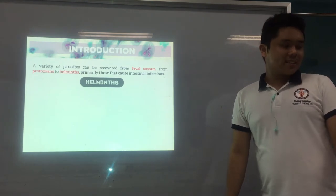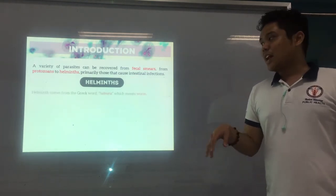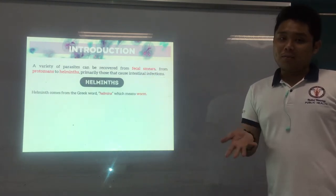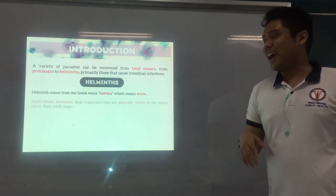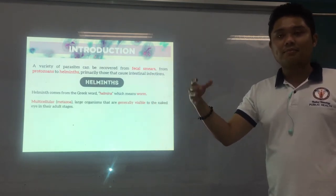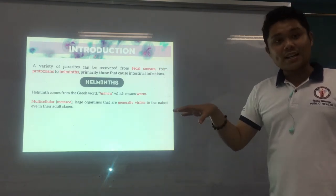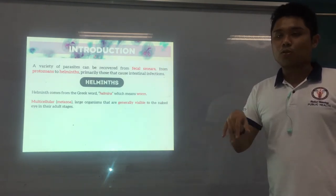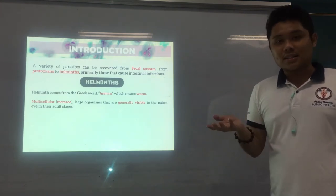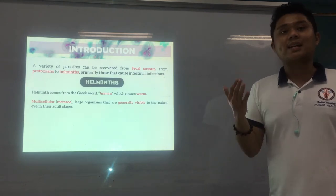We're focusing on helminths. Helminths comes from the Greek word meaning worm. They are multicellular metazoa — meta meaning many, zoa meaning cells — so multicellular. They are large organisms that are generally visible to the naked eye, but some are not. For example, your filarial worms, your blood nematodes — the worms found in your blood — cannot be seen with the naked eye.